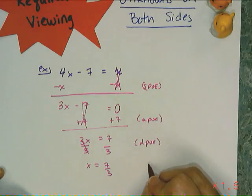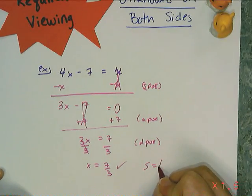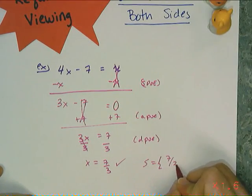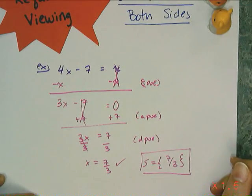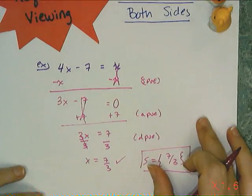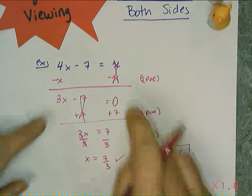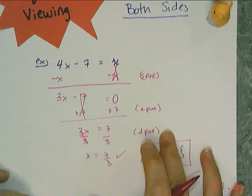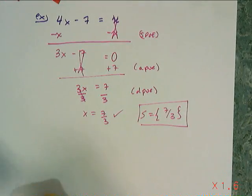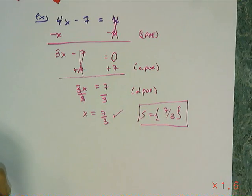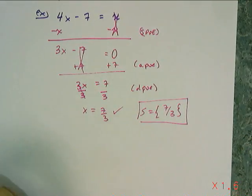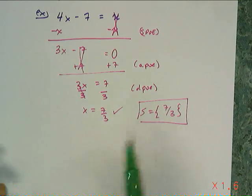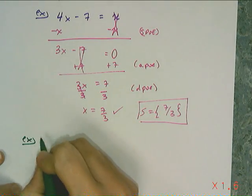I can check it and say that my answer is 7 thirds. The key — and the only new thing you have to know — is that if the unknown appears on both sides, you want to subtract it or add it to both sides of the equation using APO or SPO to get rid of it off of one side, to zero out the variable on that side. And you can add or subtract to whatever side you want.